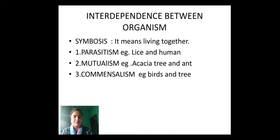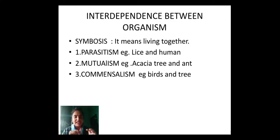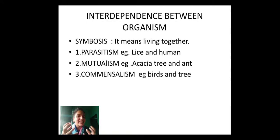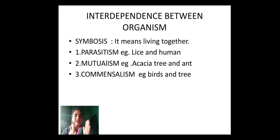Next, we have commensalism. Commensalism is a kind of relationship where one organism gets benefit and another organism is neutral — neither getting any benefit nor any harm. For example, birds and a tree: birds live on trees, make nests, and get food from the tree, so the bird is getting benefit. But in return, the tree is not getting any benefit and is not getting any harm from birds. Commensalism is a relationship where one organism gets benefit and another is neutral.